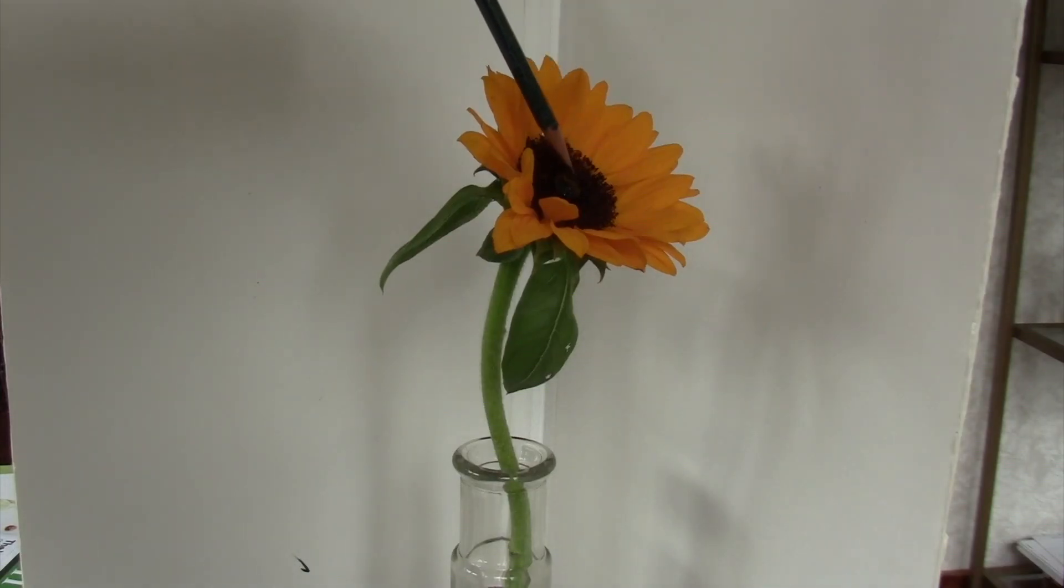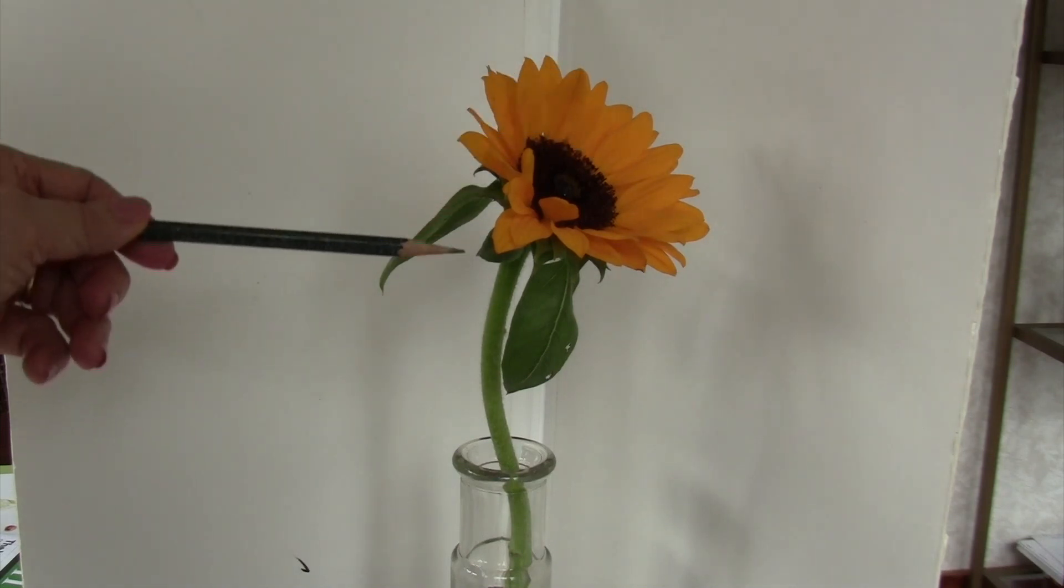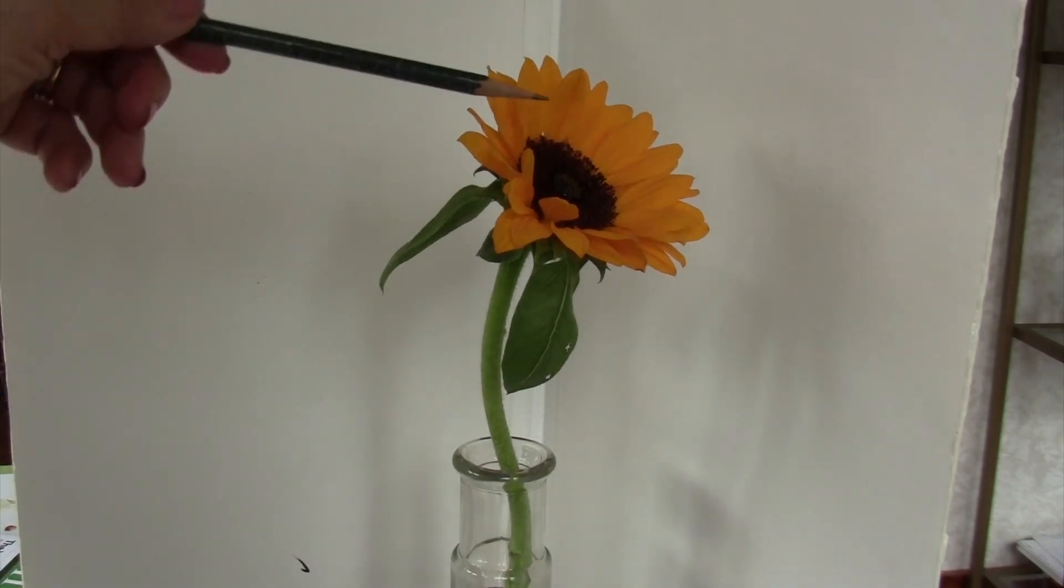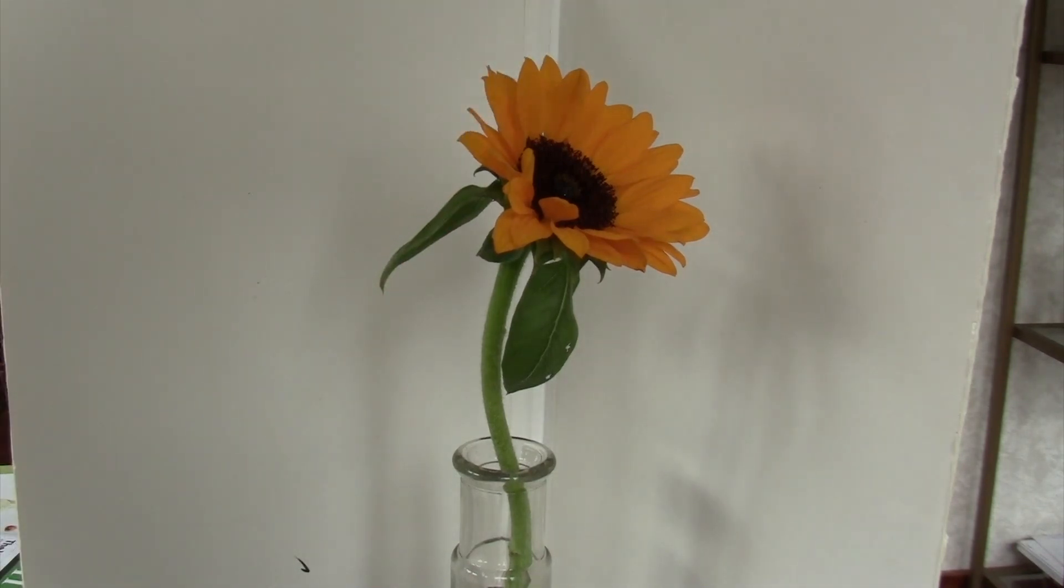This center point for the flower will help you to know where to start the stem movement in order to get the stem aligned with the center of the flower. And you can actually figure out from where that leaf is to the center of the stem, and that'll tell you just about where that stem is going to come in in relation to the center of the flower.